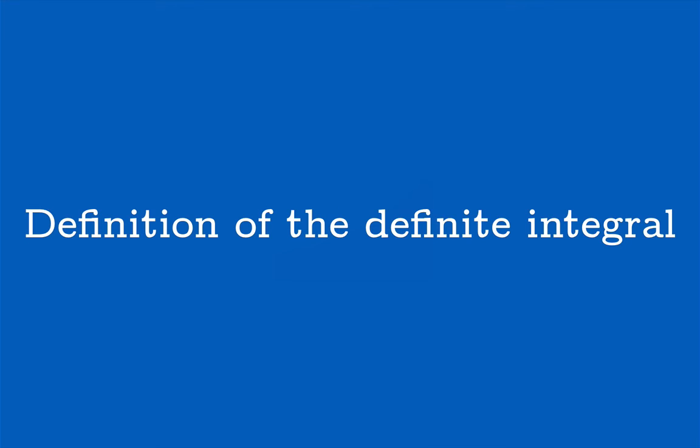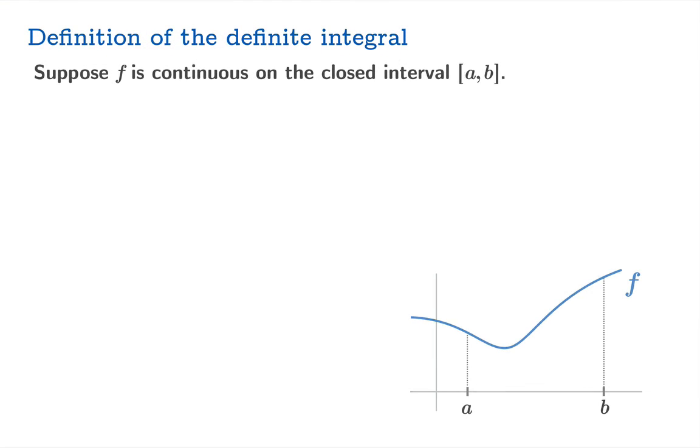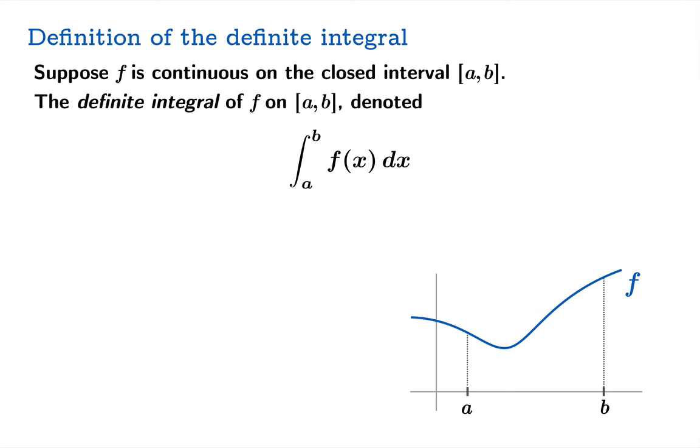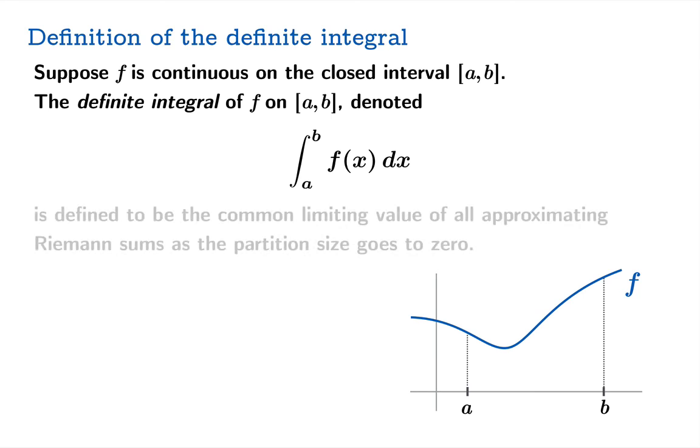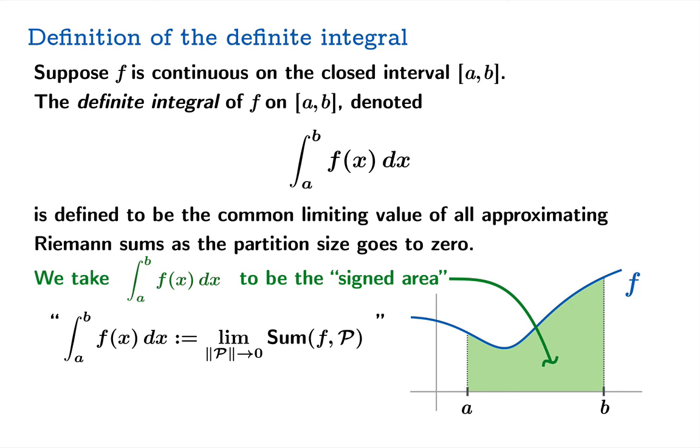So it's time then to see the official definition. Suppose f is continuous on the closed interval from a to b. The definite integral denoted by this symbol is defined to be the common limiting value of all approximating Riemann sums as the partition size goes to zero. So there's our integral. It is defined to equal the limiting value of Riemann sums as the partition size goes to zero. Now we'll put quotes around this because in practice you don't actually take a partition size to zero. You look at a sequence of partitions for which this partition size goes to zero. And really in practice that might be midpoint sums or left-hand sums or something like that. But in any case, that's our definition of the definite integral. And the number you get is what we take to be the signed area under the graph of f.